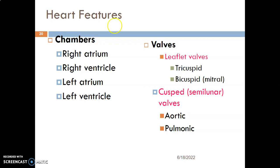So we have four chambers: right atrium, right ventricle, left atrium, and left ventricle. The right atrium receives blood from the superior and inferior vena cava, then empties deoxygenated blood into the right ventricle. From the right ventricle, blood is pumped through the pulmonary trunk to the pulmonary arteries to the lungs for oxygenation. After oxygenation, through the pulmonary veins, blood comes into the left atrium, then into the left ventricle, which pumps the blood through the aorta and distributes it to the rest of the body.